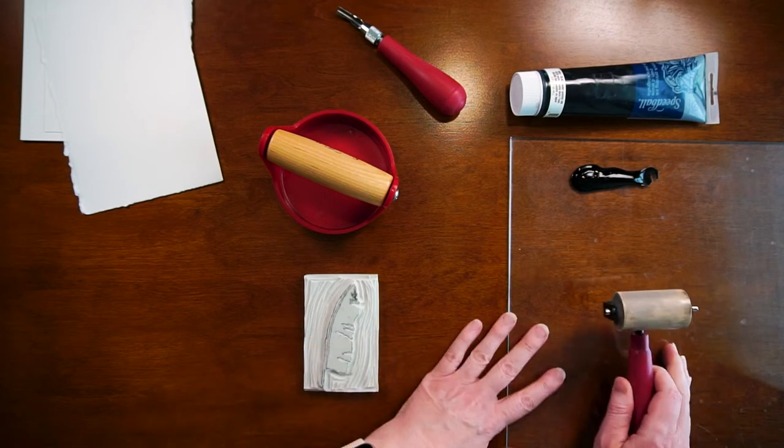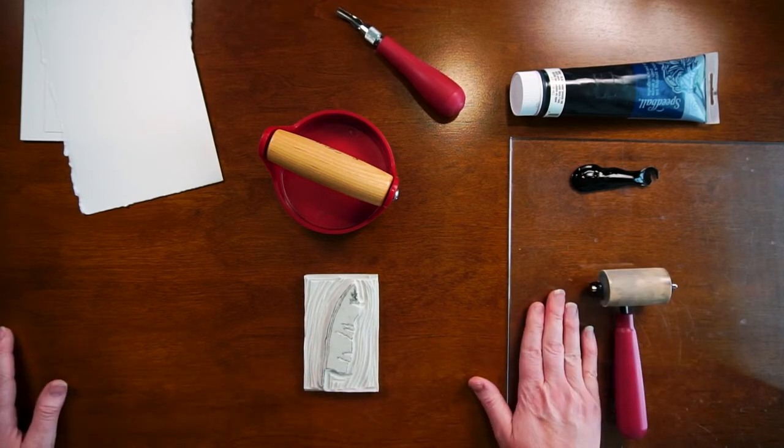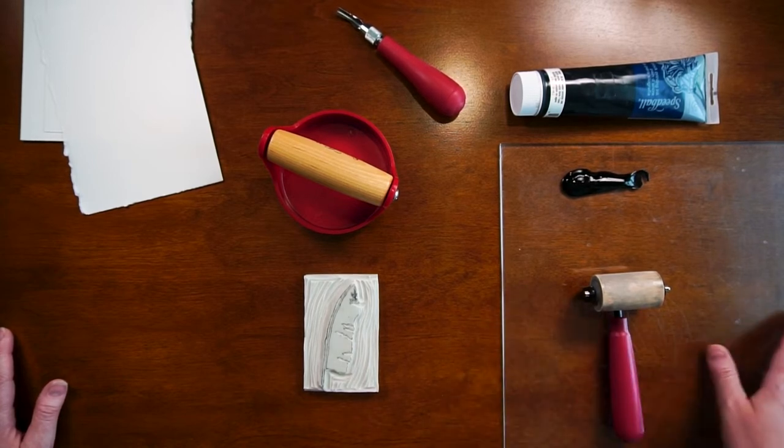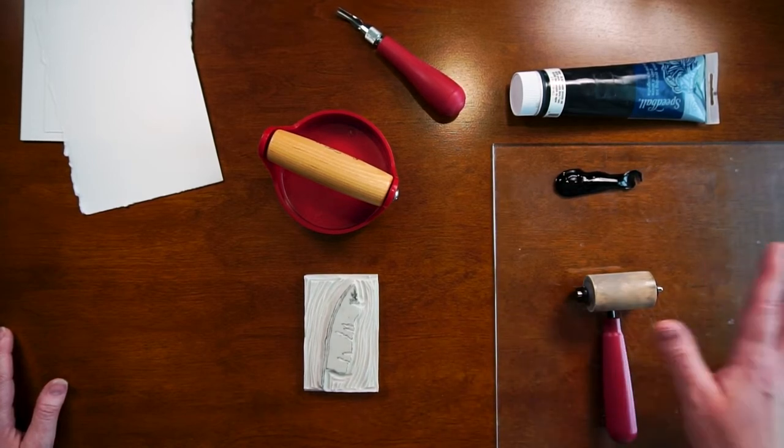So you'll need those items, you'll need something to put your ink onto because you're not going to want to put it directly onto a table. So I'm using a piece of plexiglass.